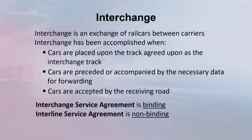An interchange is the exchange of rail cars between carriers. Car service rule 7 identifies three criteria for successful interchange. First, cars must be placed on the agreed upon interchange track. The location of the interchange track is station specific. Carriers review local operations and agree on the best way to accomplish the interchange and agree on a track or tracks to be used.